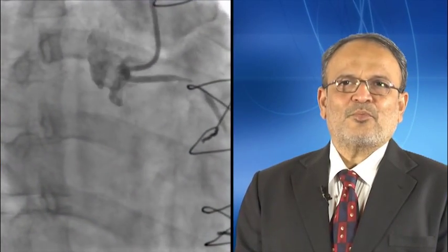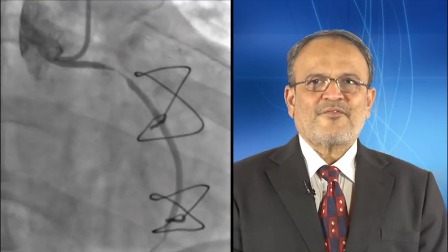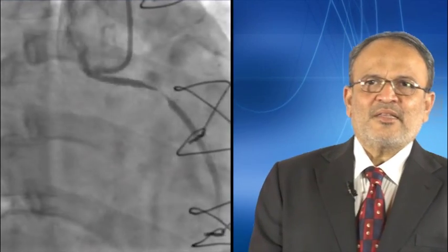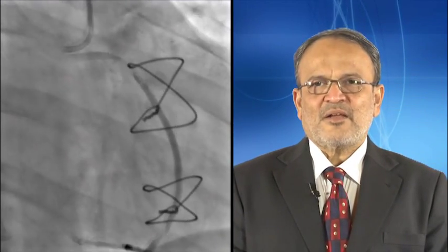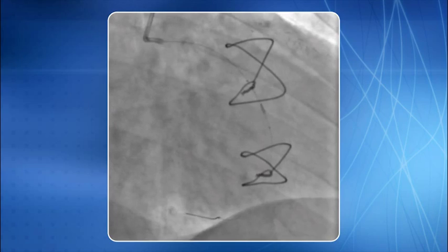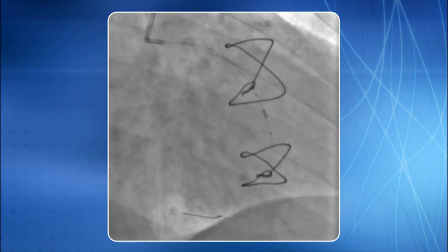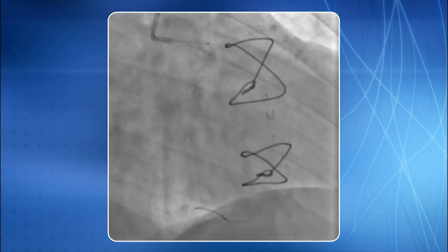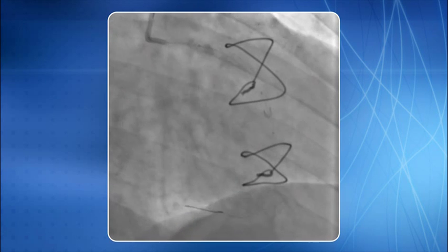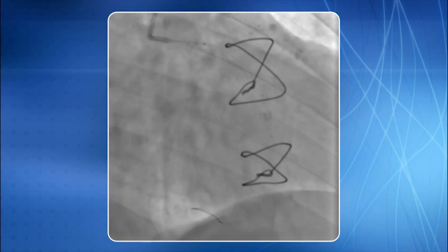This is an interesting case of two very tight lesions in the saphenous vein graft to PDA. The first lesion is in the proximal part and the second is in the distal segment. A 6F AR1 guide catheter was seated coaxially in the graft. Interestingly, the distal protection device was deployed in the middle part of the graft, equidistant from both lesions, because we were not able to negotiate the device distal to the second lesion.